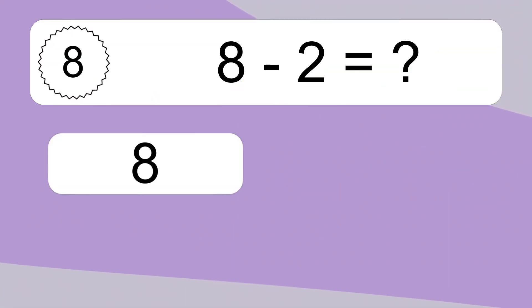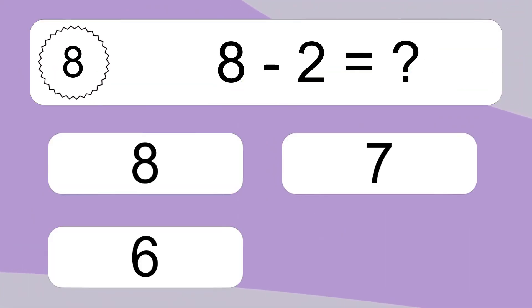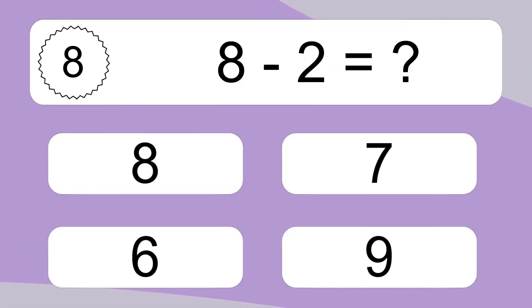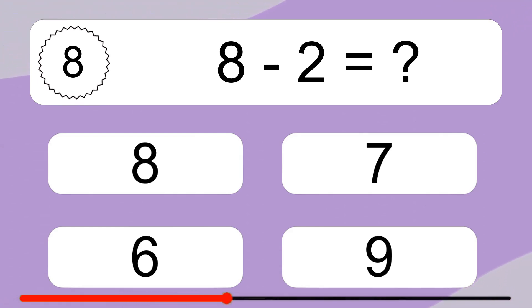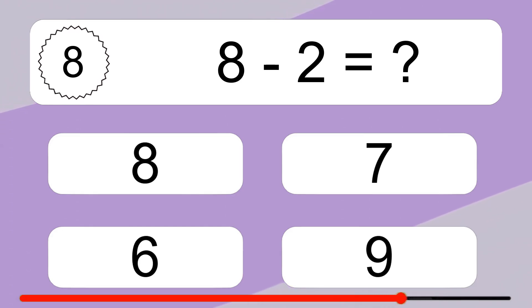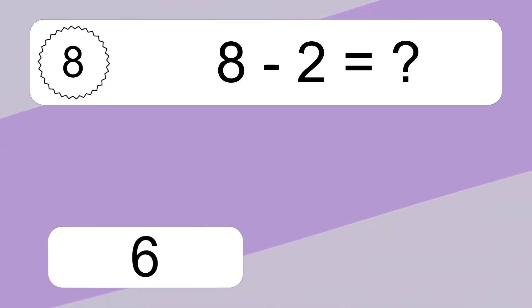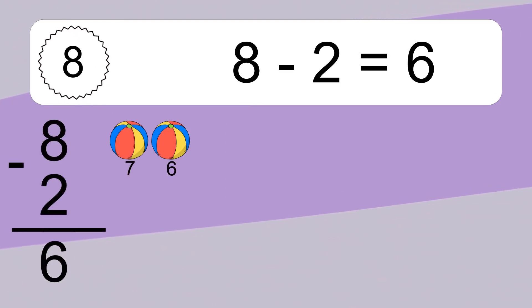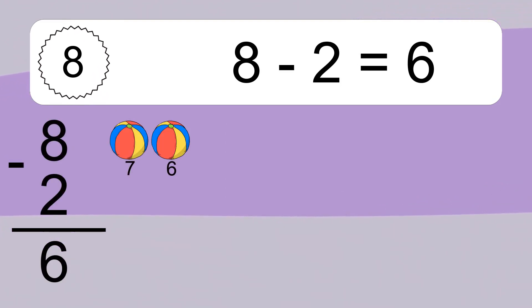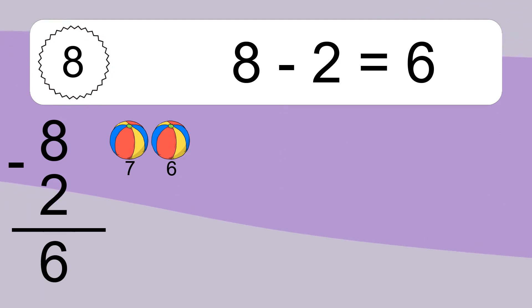Eight minus two equals what? Eight minus two equals six. Let's count it: seven, six.